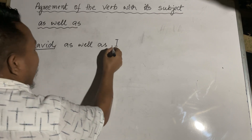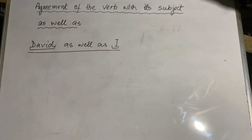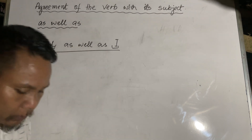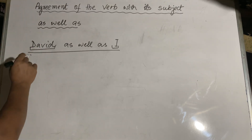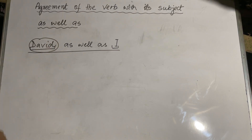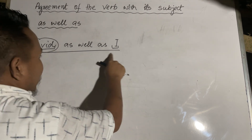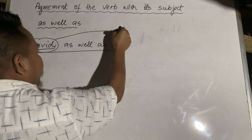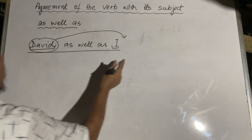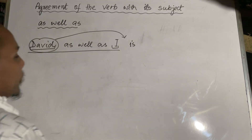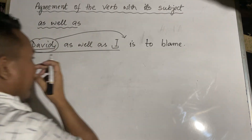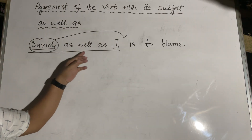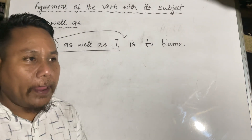David and I are the plural. This is plural. David as well as I — this is a word. First and foremost, this sentence is a subject. The noun verb is verb. For example, to blame — David as well as I are to blame. This is a word.